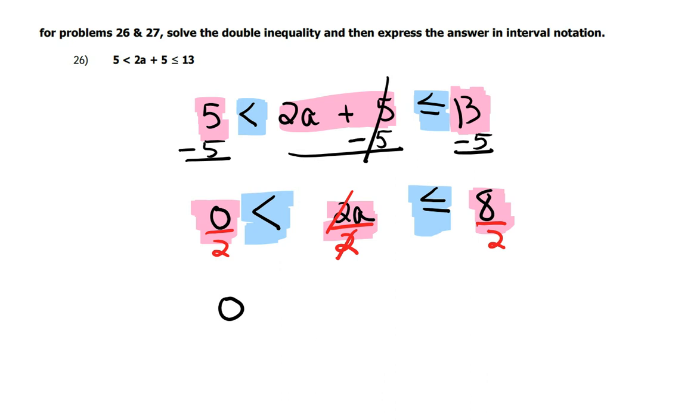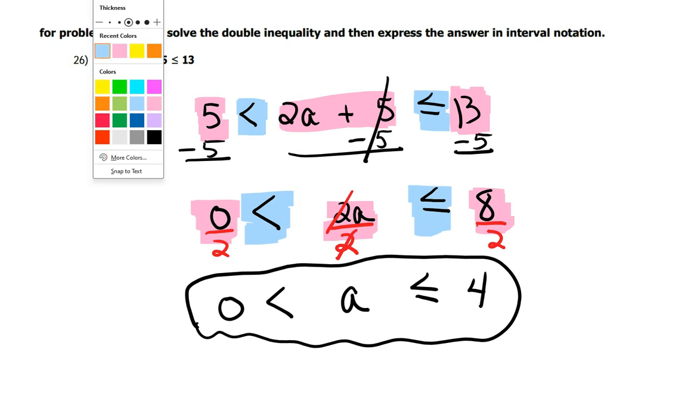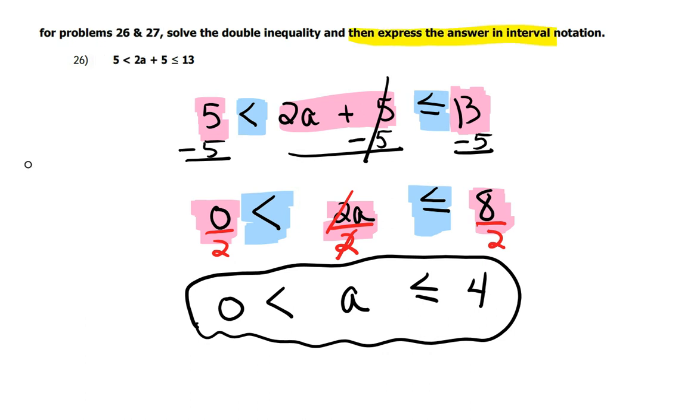And 0 divided by 2 is still 0. And here you just have the A. And here 8 divided by 2 is 4. Alright, and I said solve it. Okay, I have solved it. Technically, this is my answer when I'm done. But then I wanted you to express your final answer in interval notation. And I can see that A is in between 0 and the 4.